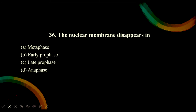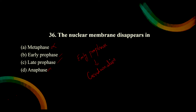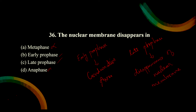The nuclear membrane disappears in - let's see the options. Metaphase - chromosomes stand on equatorial plate, so that is wrong. Anaphase - chromosomes get separated, also wrong. We have to distinguish between early prophase and late prophase. In early prophase, there is condensation and aster formation. In late prophase, there is disappearance of nuclear membrane, formation of spindles, and further condensation. So the correct option is C, late prophase.